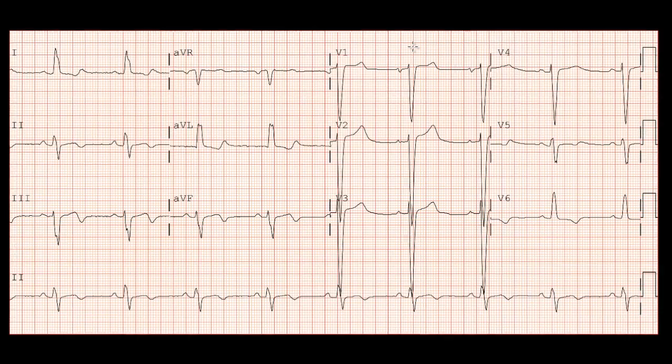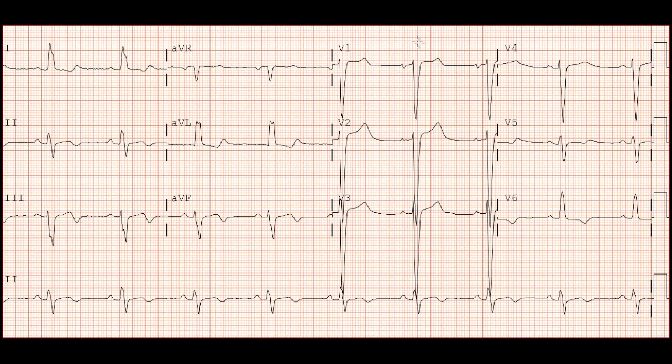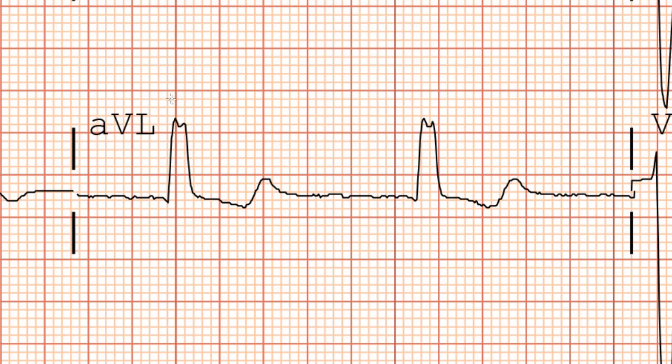Let's try it on another one. So this tracing you can see is also pretty regular. You've got a similar amount of space between each consecutive QRS complex, so we can use our box method. So let's go ahead and find a QRS complex that's on the line. This one looks like it's about on the line, and we'll just count off 300, 150, 100, 75, 60, 50. So we can see here our QRS complexes somewhere between 60 and 50, so I'll go ahead and say our heart rate here is about 55 beats per minute.